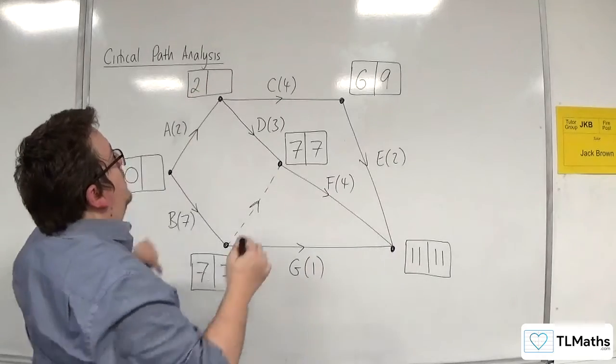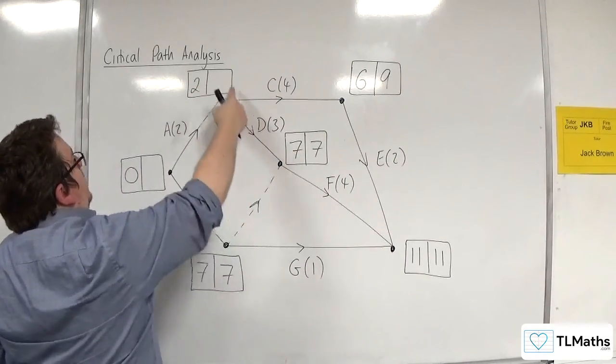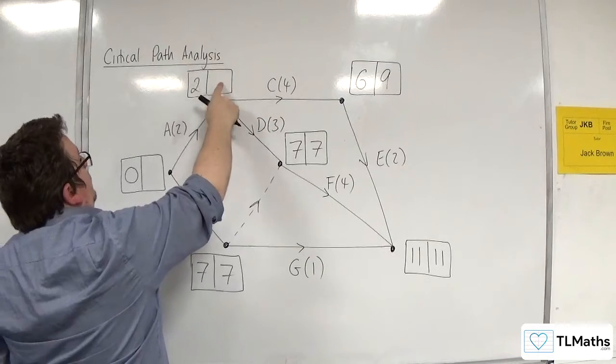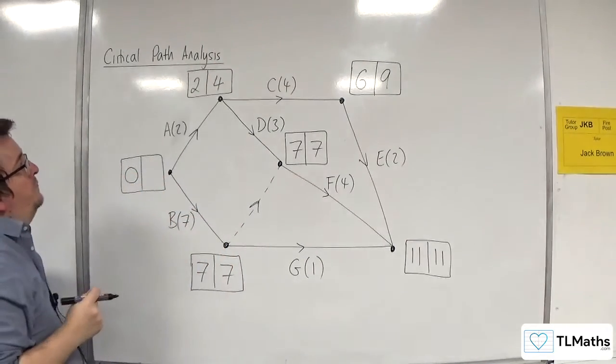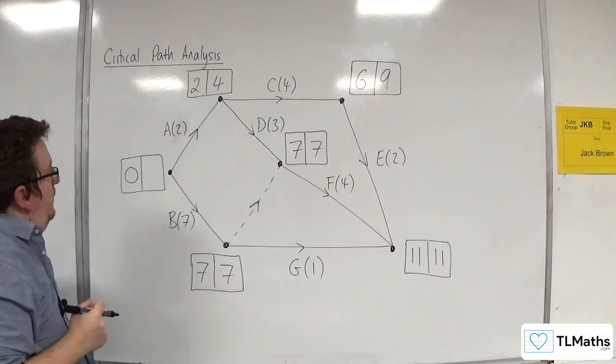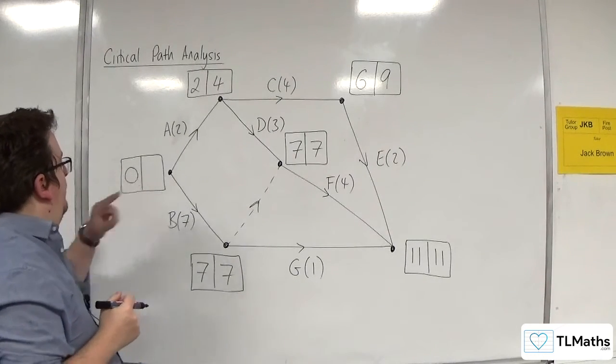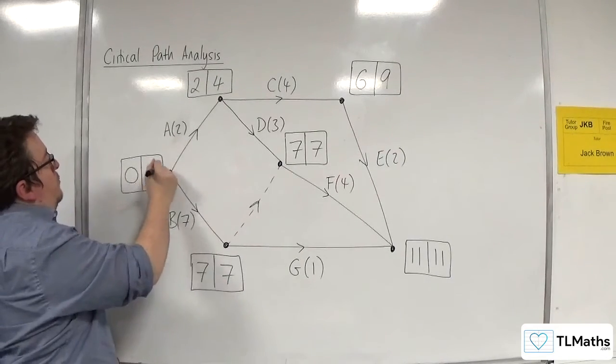So for this one, we've got nine take away four is five. Or seven take away three is four. So this one would need to be four. So then for this one, we've got seven take away seven. Or four take away two. So zero.